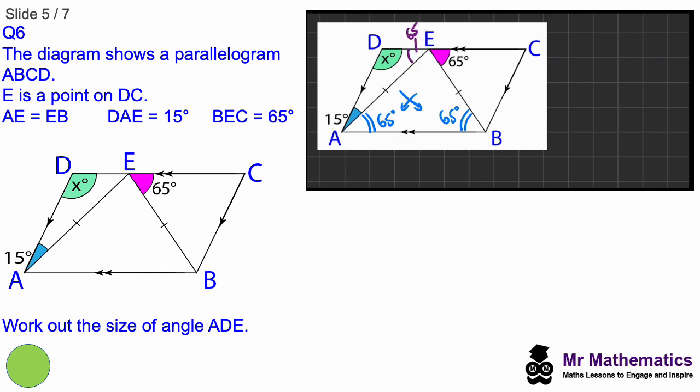So now we've got a triangle ADE, where we know all three angles add up to 180. So we can work out angle X as 180 minus the 15, which is this angle here, take away the 65, which is this angle here. And this gives us 100 degrees.